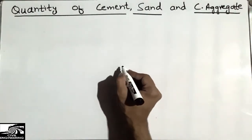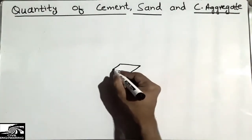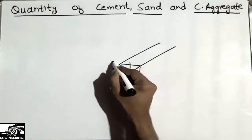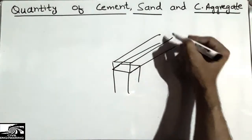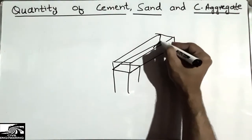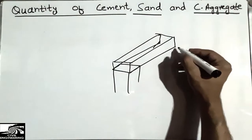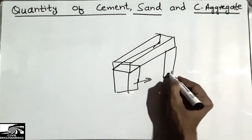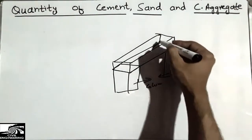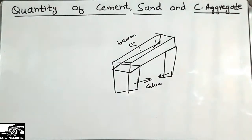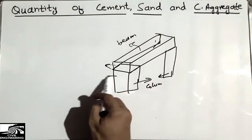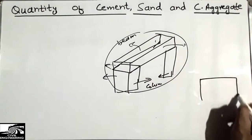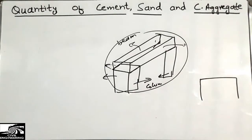Consider this example: we have a column, and a beam is being supported on two columns. I'm going to show it in 3D — this is the beam, and it is supported on two columns, one on each side. We are interested in finding how much cement, fine aggregate, and coarse aggregate is used in this whole frame structure.